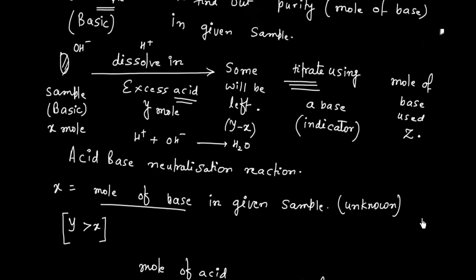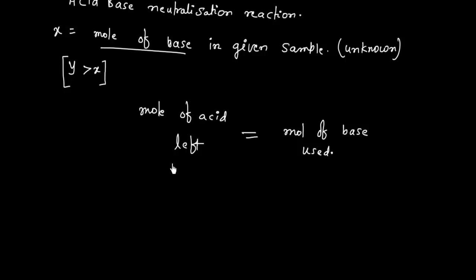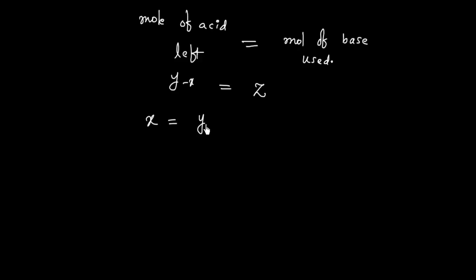So to summarize: we have a basic sample neutralized by excess acid of y moles. Some acid remains — that is y minus x — assuming 1 mole of acid is neutralized by 1 mole of base. We titrate the y minus x leftover acid using a base of z moles. Moles of base used equals moles of acid left, so y minus x equals z. From this we can calculate x equals y minus z.